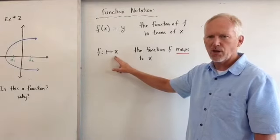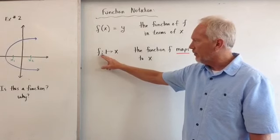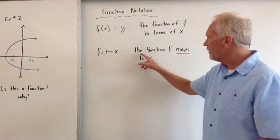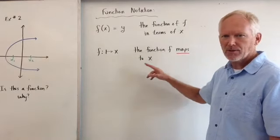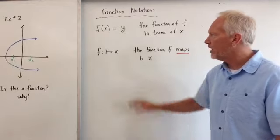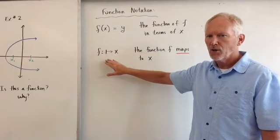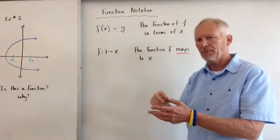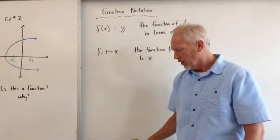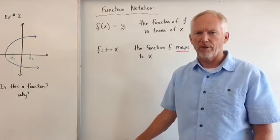Now we also see this interesting notation here. We see f, colon, a little arrow here with two and x. That is the function of f maps to x. We'll see that sometimes in our class where instead of this notation, f of x, we'll see it mapping. Where does it map to? If we put in an x, what is it mapping to? Hope you enjoyed today. Learned a lot. Thanks a lot. Have a great day.